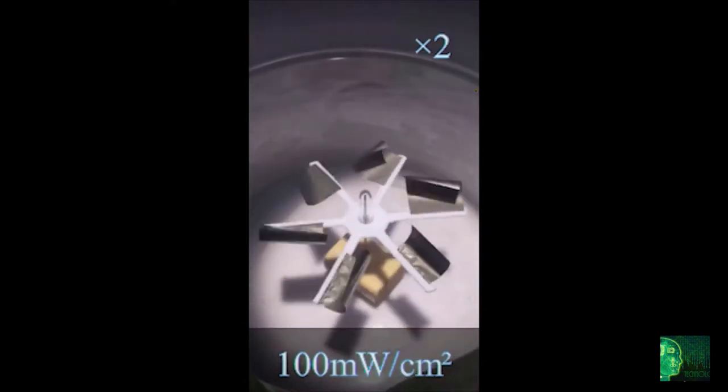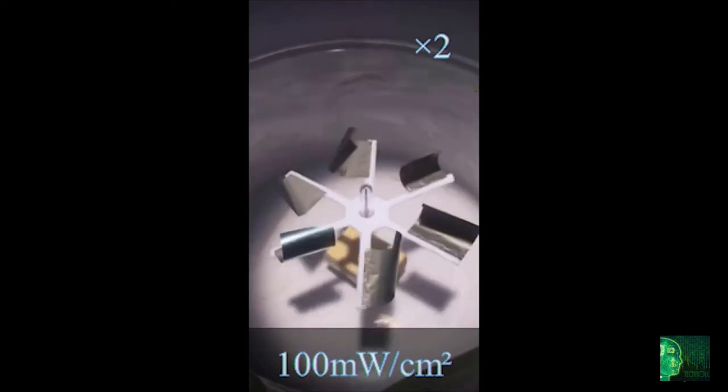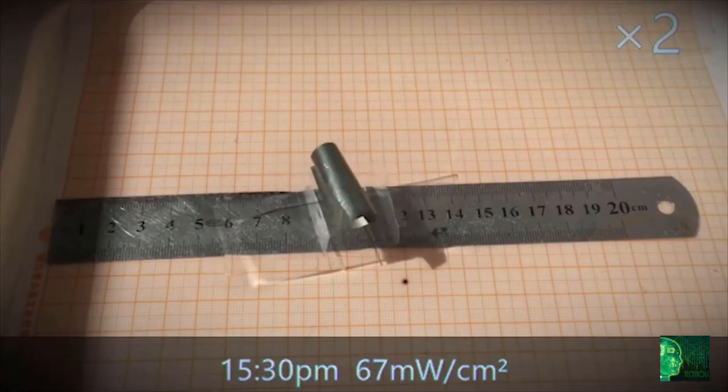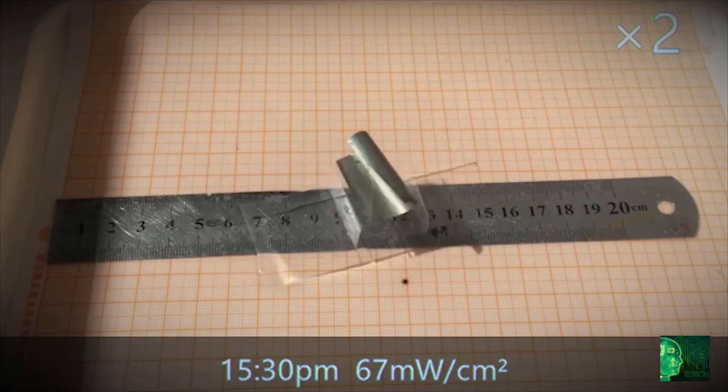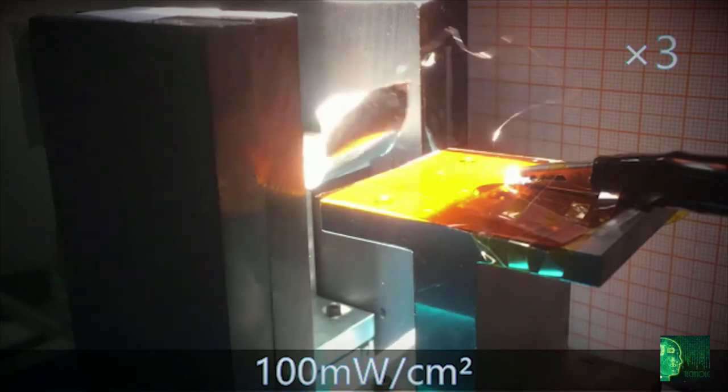The team demonstrated the flapping wings in several applications. For example, they fashioned a light-driven whirligig that rotated continuously without any wind. They also made a toy boat that sailed across water outside in natural sunlight, and a device that converted simulated sunlight into an electric current.